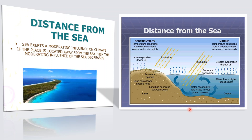We all know that land gets heated more quickly than water, and land also cools more quickly than water because it gives out its heat very quickly. This is mainly because of the low specific heat capacity of land, whereas water takes a longer time to get heated but also cools very late. During daytime, land gets heated faster than the surrounding water bodies, and at night the land radiates its heat very quickly.